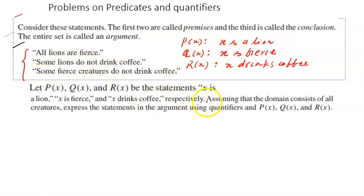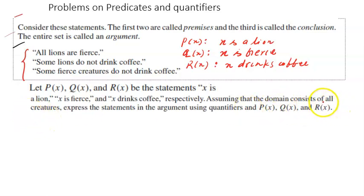One thing we need to be clear about is our domain of discourse — what values x can take. The domain of discourse consists of all creatures, as mentioned in the problem. So human beings, dogs, cows — we are considering all creatures.